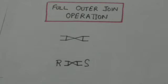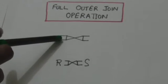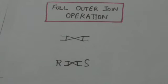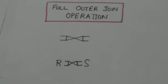Hello friends, welcome back. In this tutorial we will study about the full outer join operation. Full outer join operation is denoted by this symbol. The resulting relation of this full outer join operation will give all tuples of the left relation R and all tuples of the right relation S.